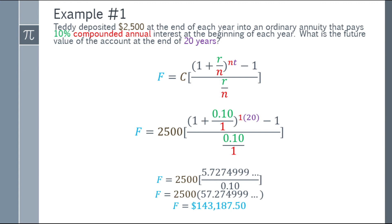So if Teddy deposits 2,500 at the end of each year with the bank paying 10% annual interest, what is the future value at the end of 20 years? That will be $143,187.50.